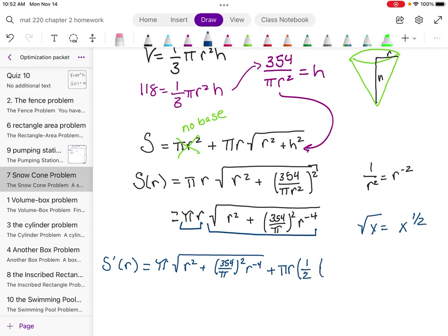So I'm going to bring down a one half. Everything under the radical would stay the same. 354 over pi all squared r to the negative 4. And then minus 1 from that power make it the negative one half power. And so that's my outer derivative.